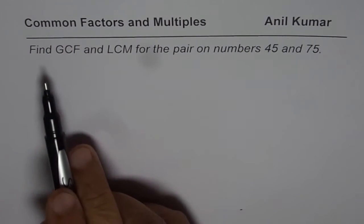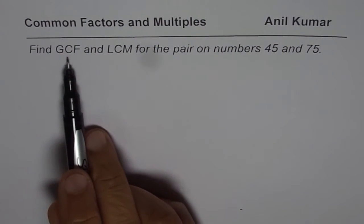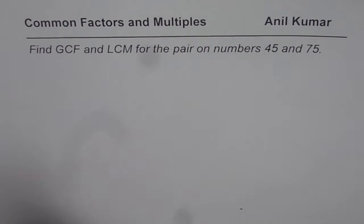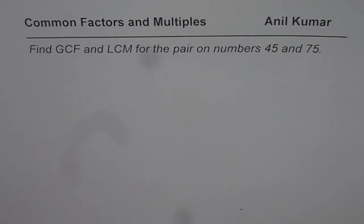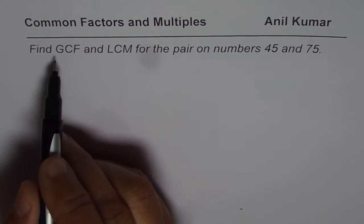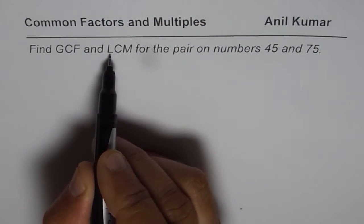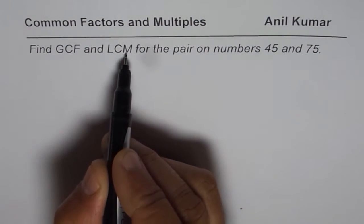The question is: find the greatest common factor and least common multiple for the pair of numbers 45 and 75. We will use the method of prime factorization to find GCF, the greatest common factor, and LCM, the least common multiple.